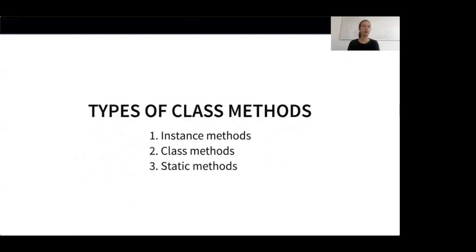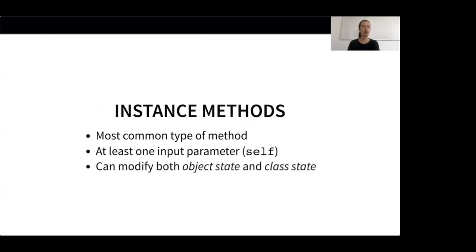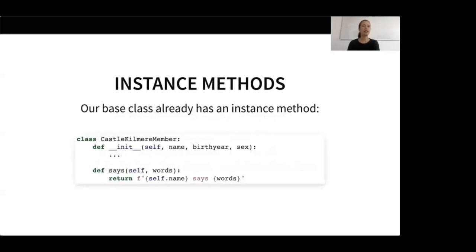Let's start with the most common one: instance methods. Instance methods take at least the parameter self as an input, which points towards an instance of the class when the method is called. An instance method can modify object state using the self parameter and class state indirectly using the self.__class__ parameter. Our base class already has an instance method — the says method takes self and a string of words that the current member of CastleKilmer should say. When the says method is called on an object, self can be used to access attributes set in the __init__ method, for example self.name.